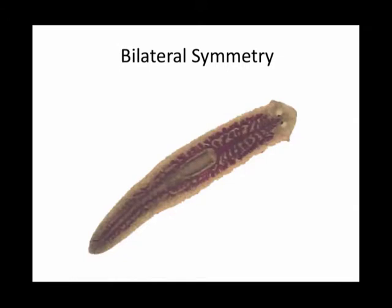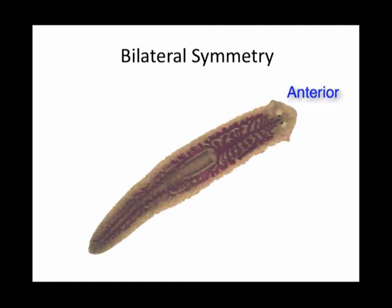Some animals, starting with flatworms, developed bilateral symmetry. Through mutations, they developed this bilateral symmetry, which provided advantages that were eventually selected for. Animals with bilateral symmetry have only one way in which you can divide them and have two mirror images — alongside the animal. If you divide it into left and right, left and right will be mirror images of each other. This was very important because once you have bilateral symmetry, you have a clear front and a clear rear — an anterior part, which is the head, and a posterior part, which is the tail.